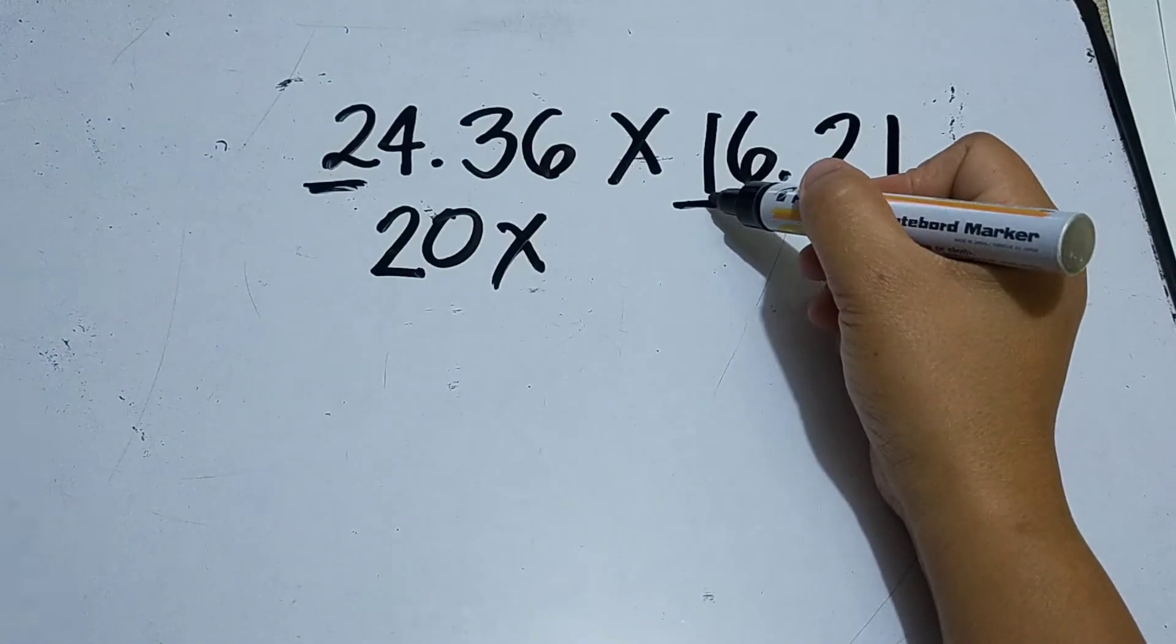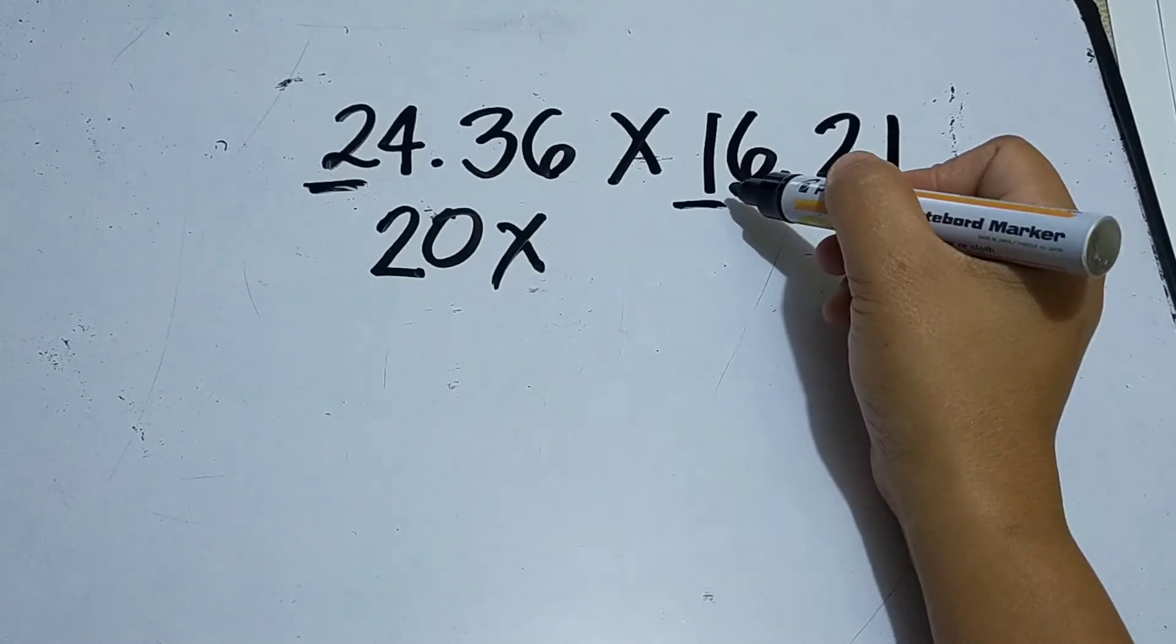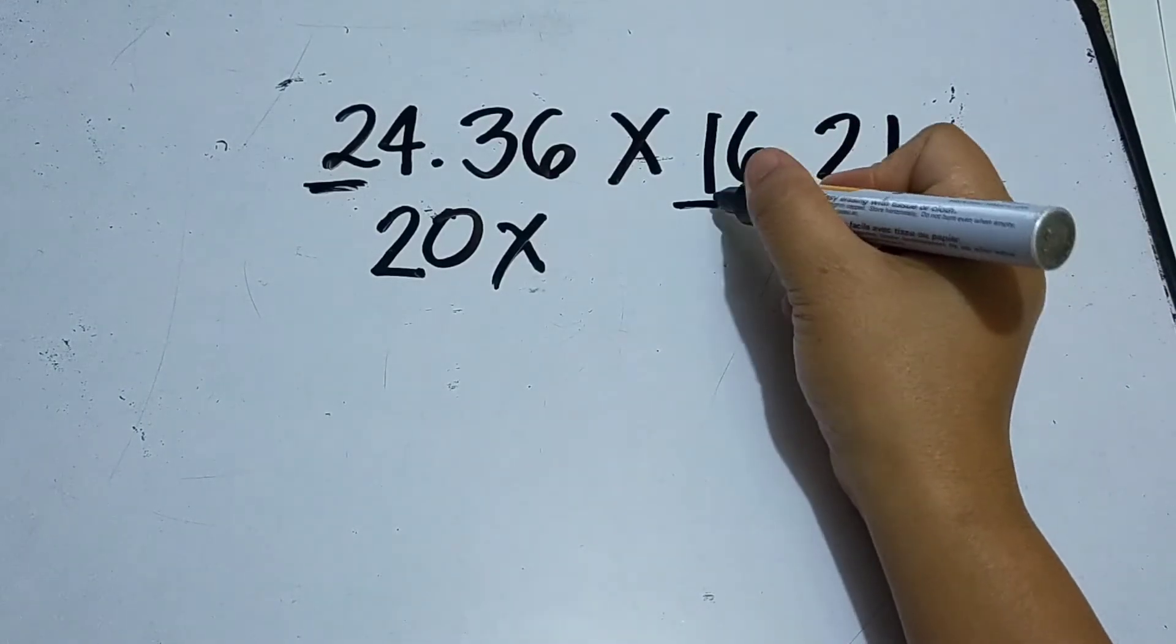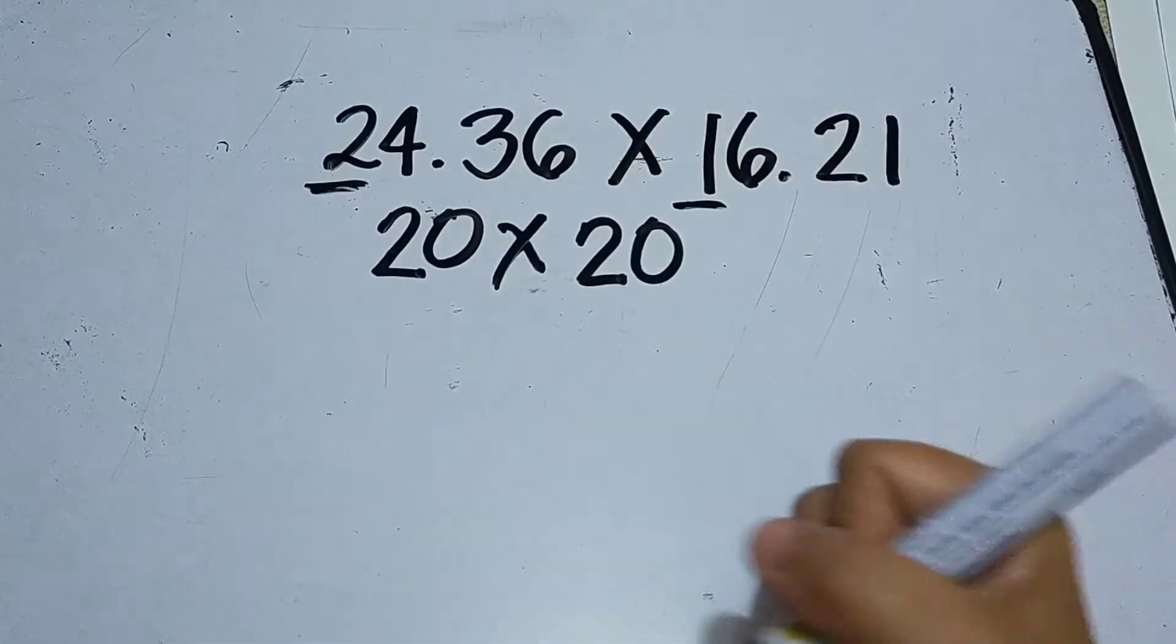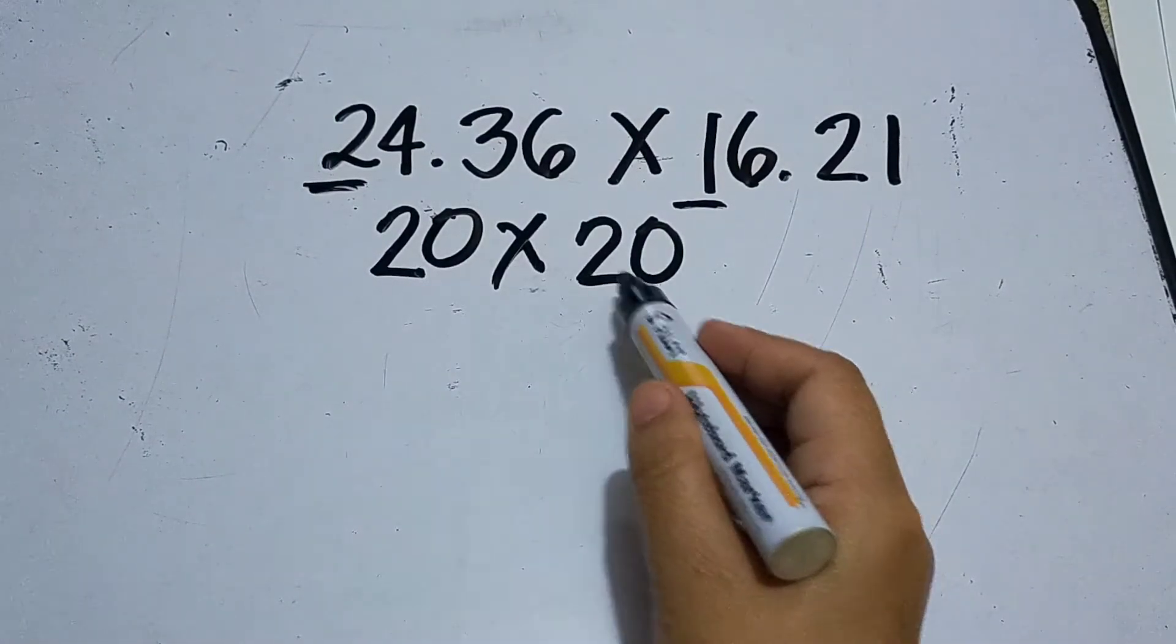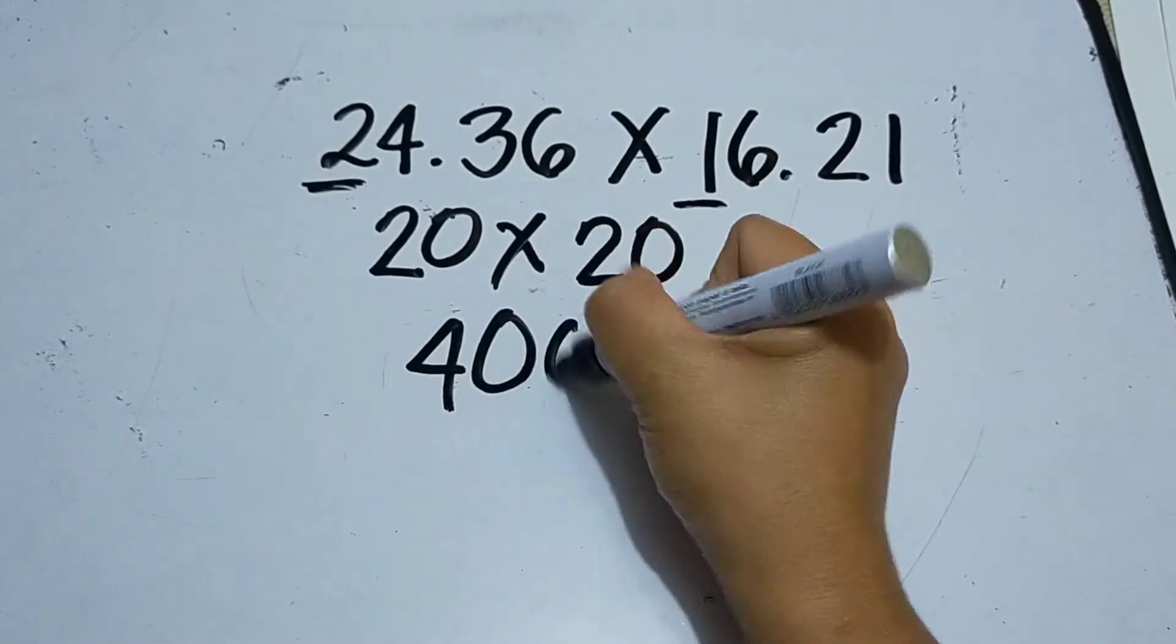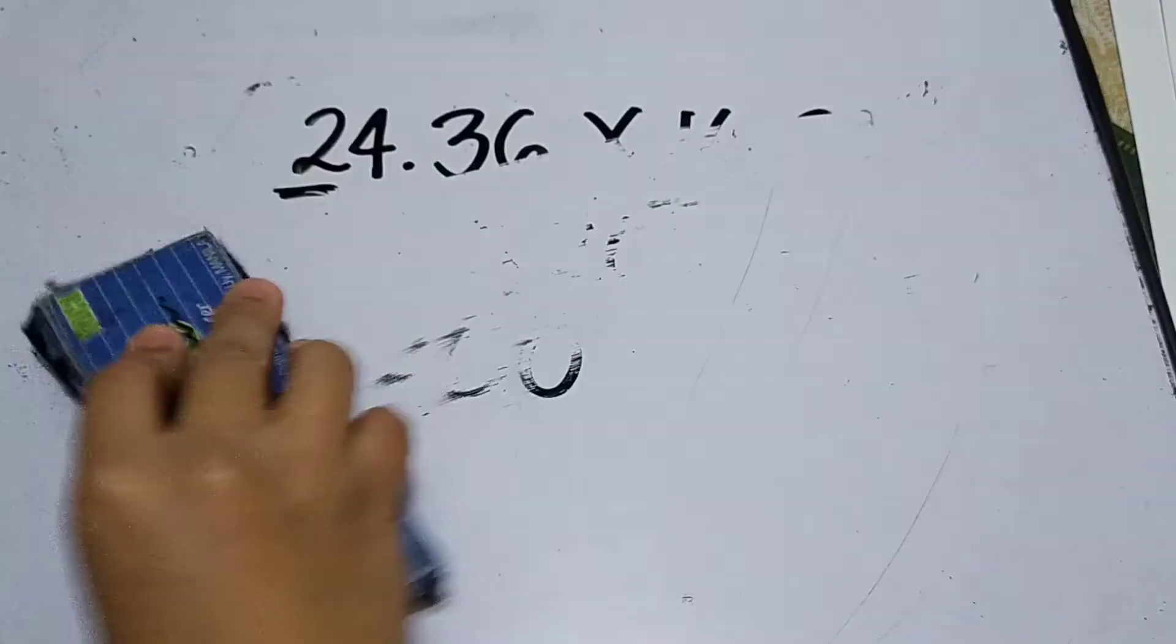Since the digit to the right of one is six, that means we're going to add one to one, because the rule when it's five to nine is round up. When five to nine is the digit to the right of the digit to be rounded off, it's twenty. Then afterwards you can multiply twenty times twenty, or to make it easier, multiply the non-zero digits: two times two is four, then bring down the two zeros. The answer is four hundred. All right, another.